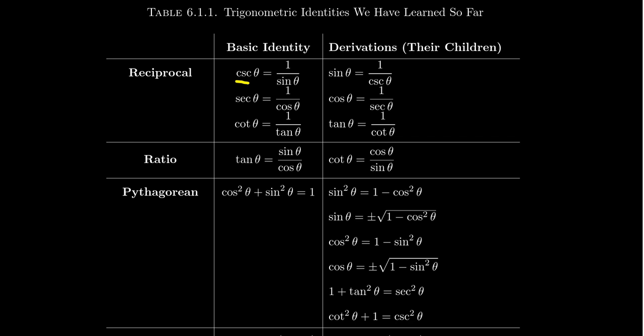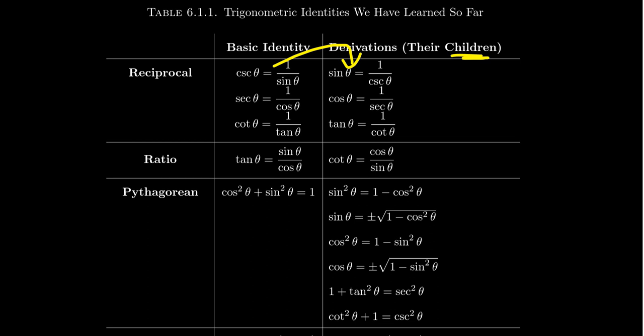For example, if you know that cosecant is the reciprocal of sine, then you also know that sine is the reciprocal of cosecant — more specifically, sin θ = 1/csc θ. Reciprocity is a two-way street; if I am your reciprocal, then you are my reciprocal. Similarly, since secant is the reciprocal of cosine, cosine is the reciprocal of secant. And since cotangent is the reciprocal of tangent, tangent is the reciprocal of cotangent. We can use these identities to create new identities — that's why we call them their children.